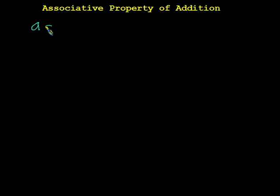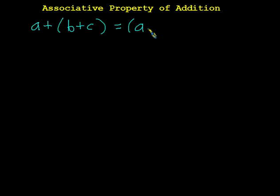Let's take a look at the associative property. The book usually shows us something like this: A plus B plus C, where B and C are in parentheses. With the associative property, you can move the parentheses and write it as A plus B plus C. But what the book never tells you is that the associative property is really focused more on grouping and less on parentheses.